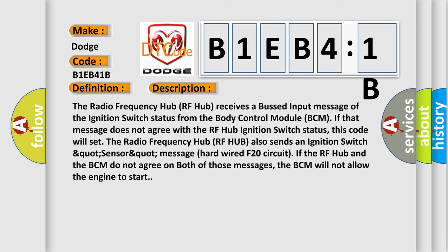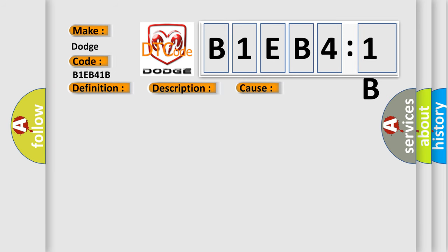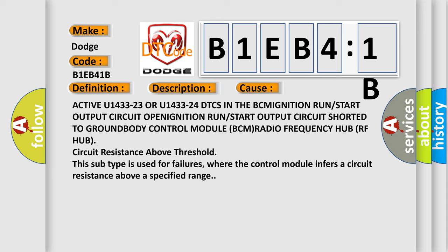This diagnostic error occurs most often in these cases: active U1433-23 or U1433-24 DTCs in the BCM ignition run/start output circuit, open ignition run/start output circuit shorted to ground, Body Control Module (BCM) Radio Frequency Hub (RF Hub) circuit resistance above threshold. This subtype is used for failures where the control module infers a circuit resistance above a specified range.